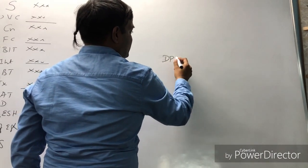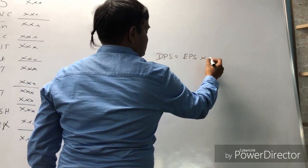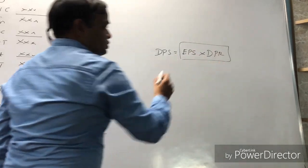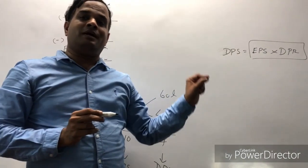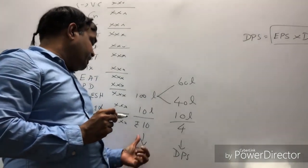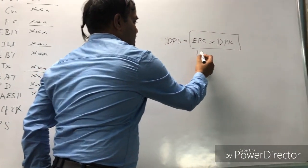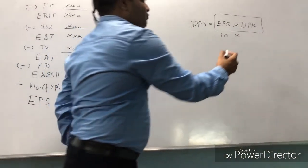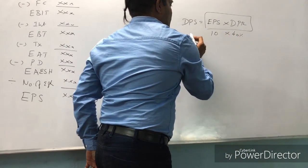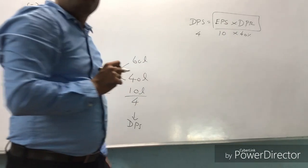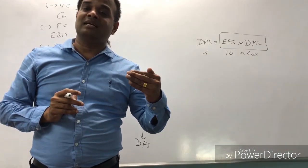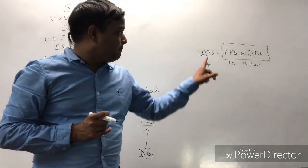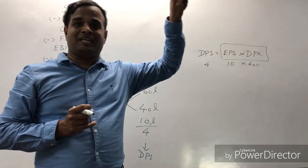Therefore, Dividend Per Share (DPS) = EPS × Dividend Payout Ratio. In this example, EPS is 10 rupees, and since only 40 lakhs out of 100 lakhs is paid as dividend, the dividend payout ratio is 40%. Therefore DPS = 10 × 40% = 4 rupees. Based on this formula, past exam questions require you to find the cost of equity (Ke).